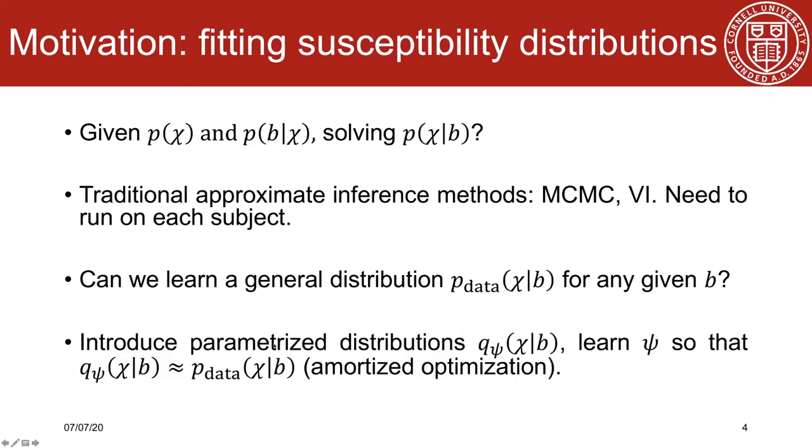To do that, we introduced a set of parameterized distributions q chi conditioned on b with parameters psi, and we learn psi on a cohort of subjects to approximate the true data distribution. People call this strategy amortized optimization.